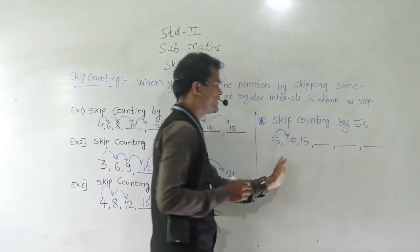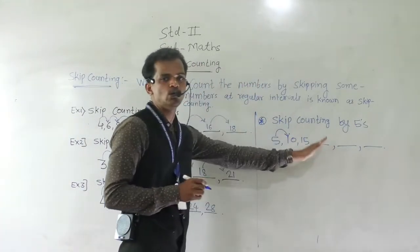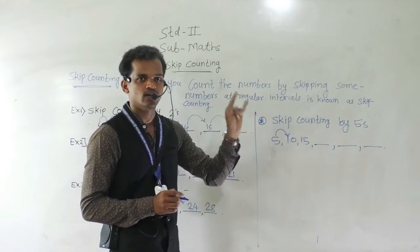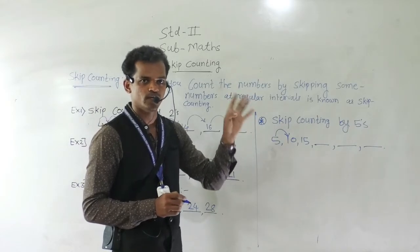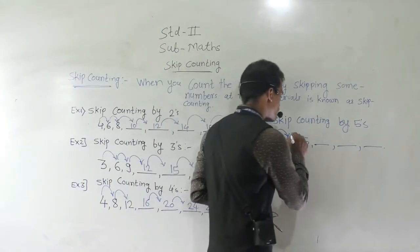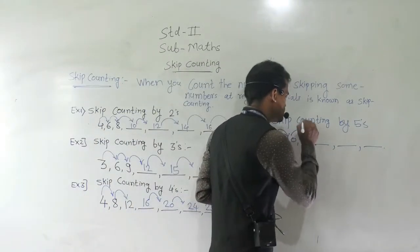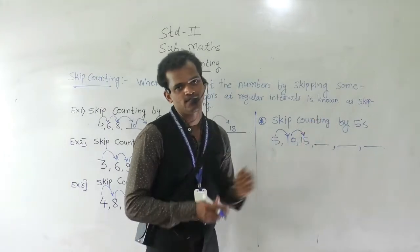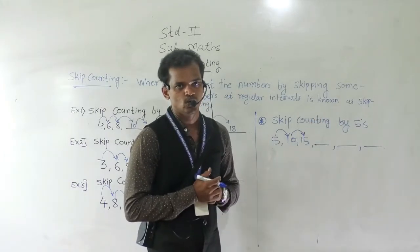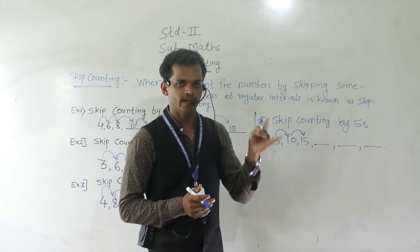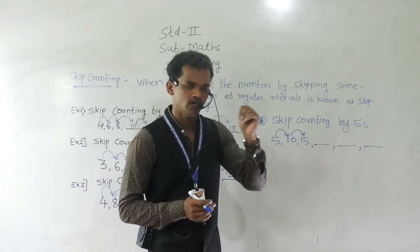Then 10 plus 5: 11, 12, 13, 14, 15. So here 15 is given. Now 15 plus 5: 16, 17, 18, 19, 20.